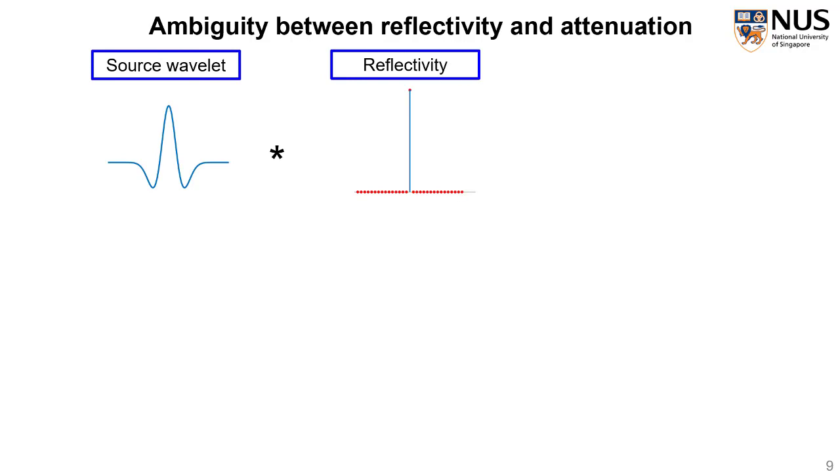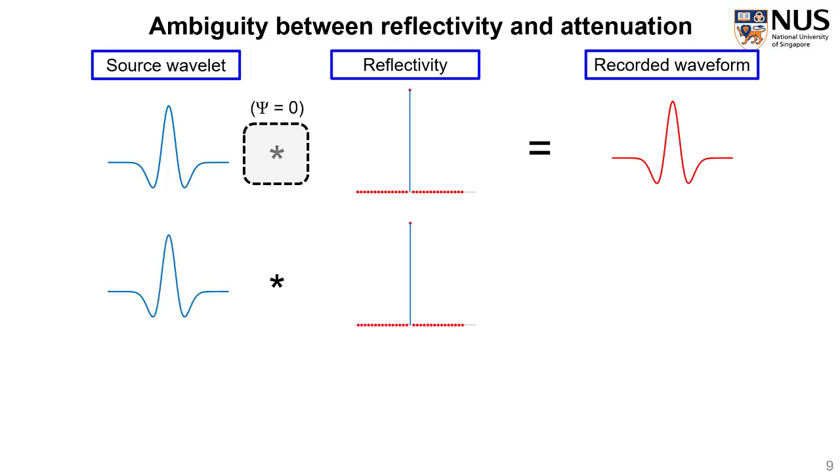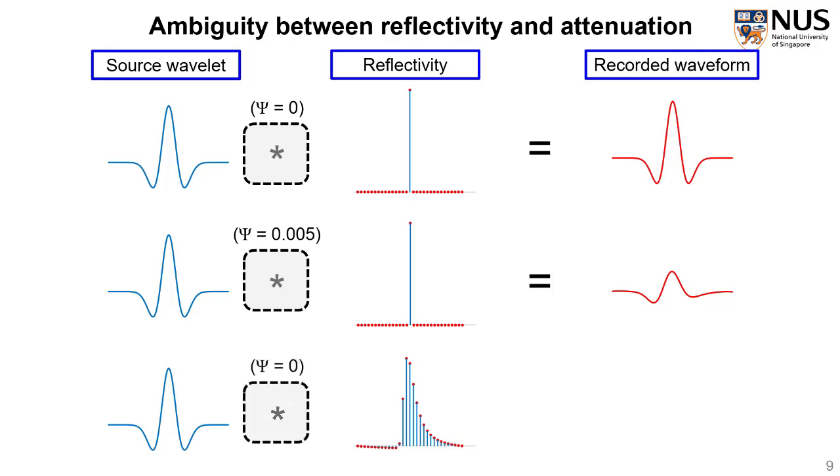Now, we have a source wavelet like this and it convolves a reflectivity like this. With no attenuation, the obtained recorded waveform will be like this. If the source wavelet convolves still this reflectivity but with this much of attenuation, then the recorded waveform will be like this. It is obviously attenuated. But if the source wavelet is convolving a reflectivity like this but with no attenuation, the obtained recorded waveform is actually the same as the second case.